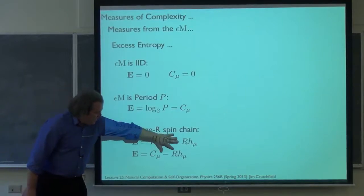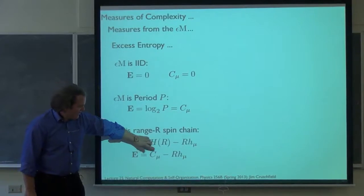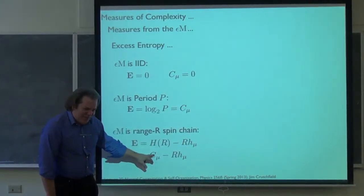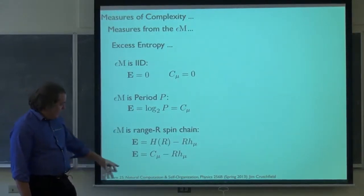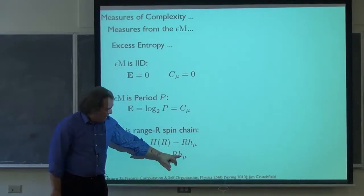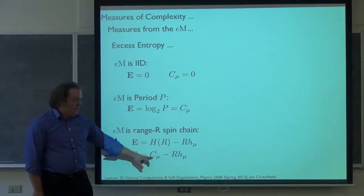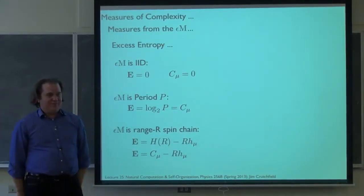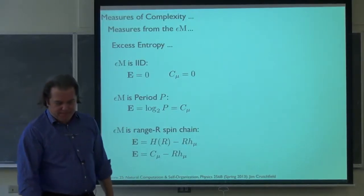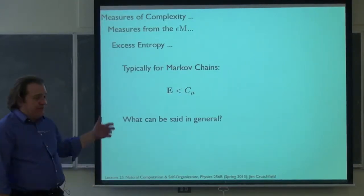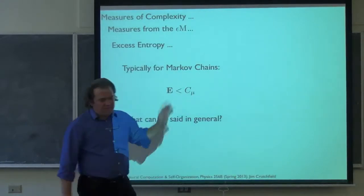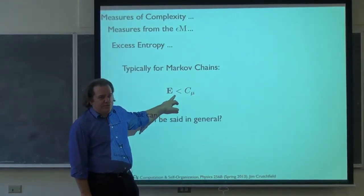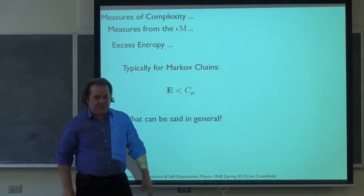I didn't know for about eight years what this discounting by randomness meant — very strange. As long as the stochastic process entropy rate is a little positive and R is some integer, the excess entropy is less than the state information. A process can have some state information, but not all of that appears in the observations. Typically for hidden Markov chains — for general finitely specified hidden Markov models, unifilar and non-unifilar — the statistical complexity is an upper bound on the excess entropy. State information is an upper bound on the mutual information you see in the observations.